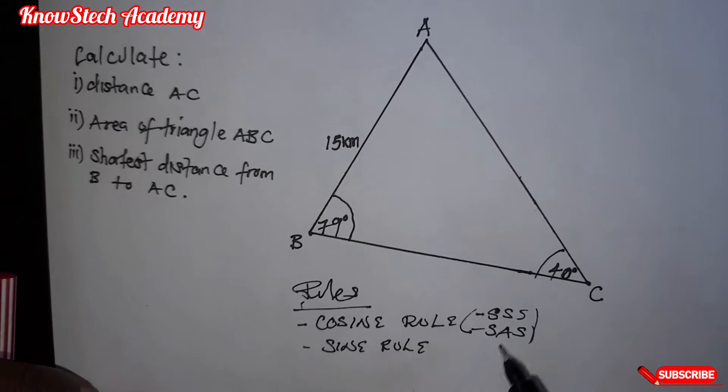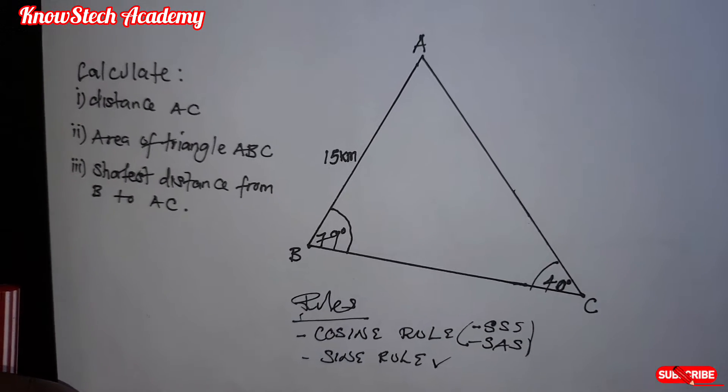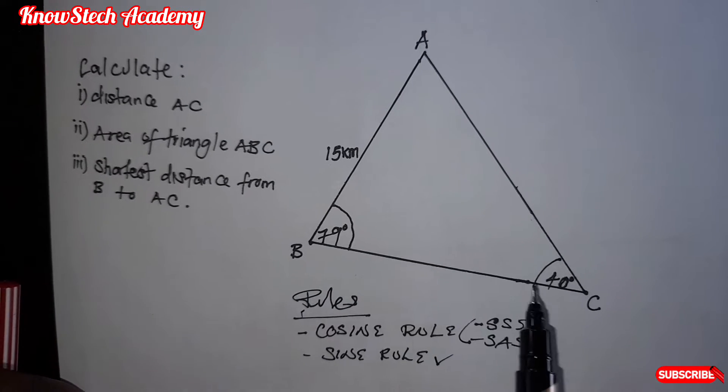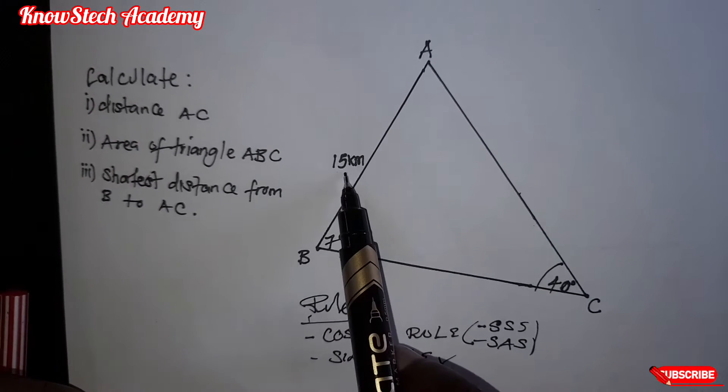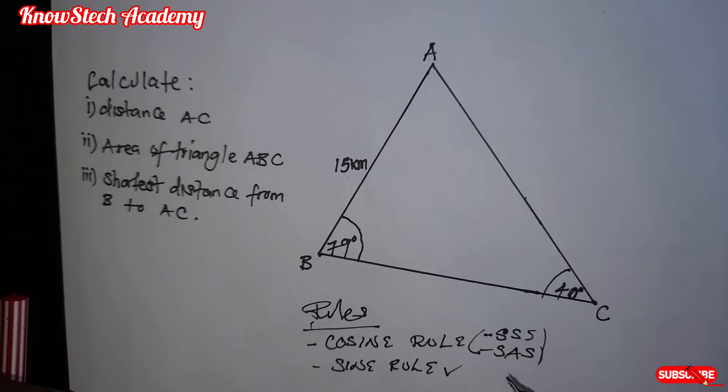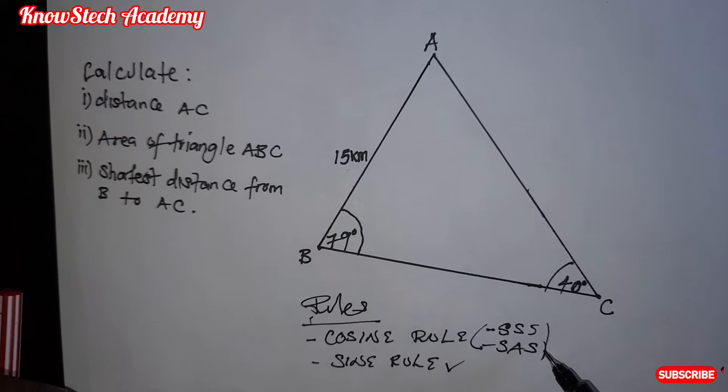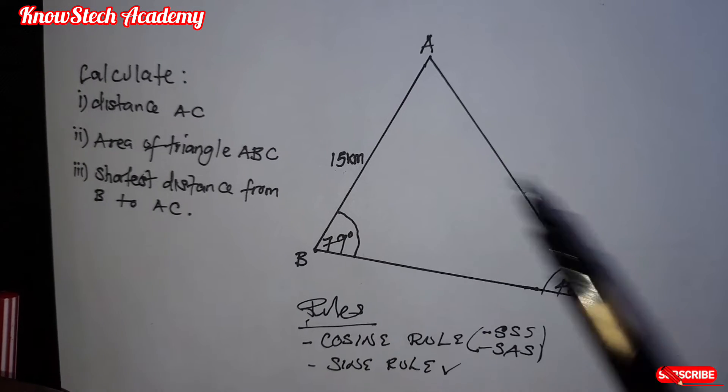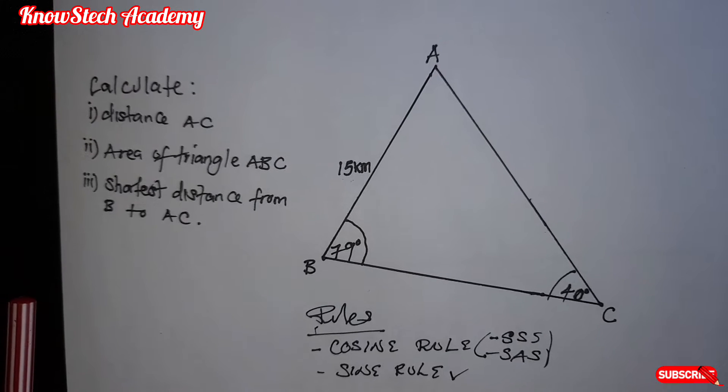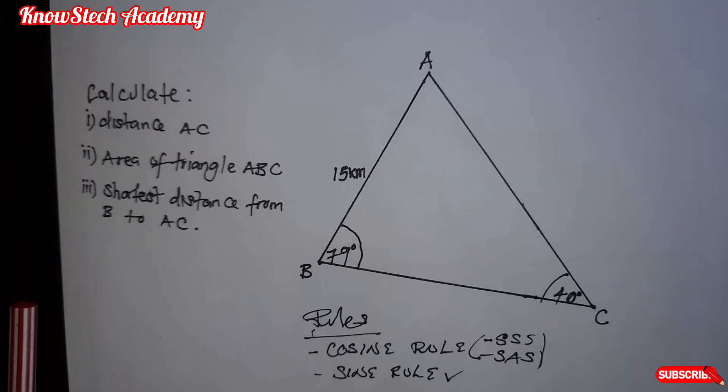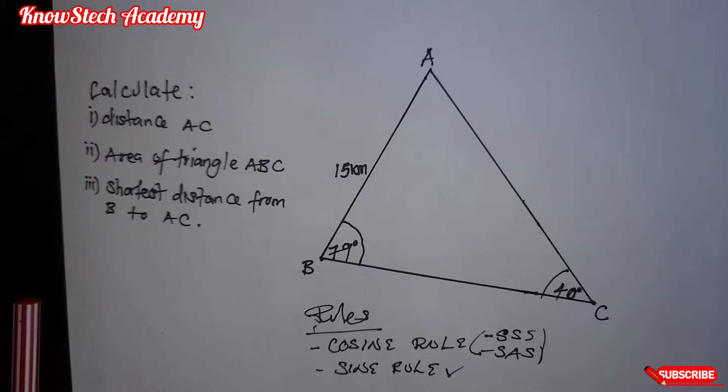Then, if it's not a cosine rule, then automatically it's a sine rule. Look at this. You have two angles and a side, but it's not side, angle, side. No, it's just angle, angle, side. So here we are going to use sine rule.